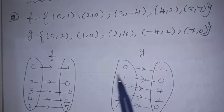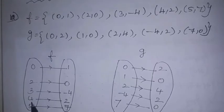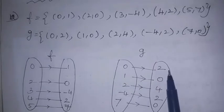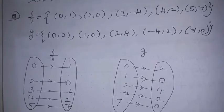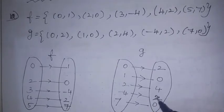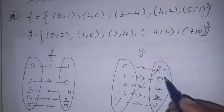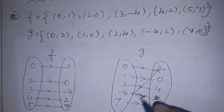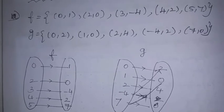Now if you look at this arrow diagram map: 0 maps to 1, 2 maps to 0, 3 maps to minus 4, 4 maps to 2, 5 maps to 7. This is 0 to 2, 1 to 0, 2 to 4, minus 4 to 2. You can go directly through the diagram. Next, 7 maps to 0, so 7 goes directly to 0.